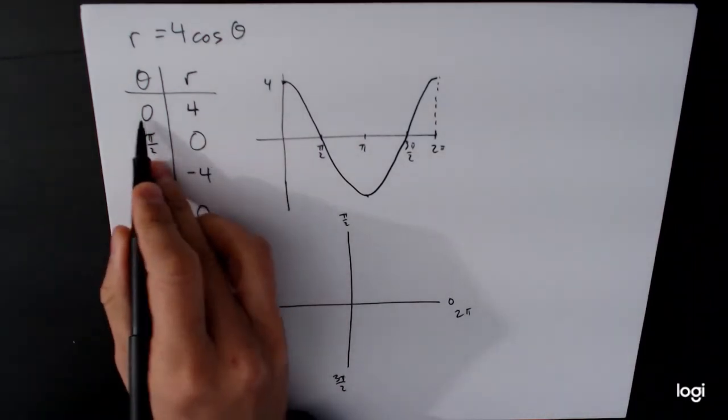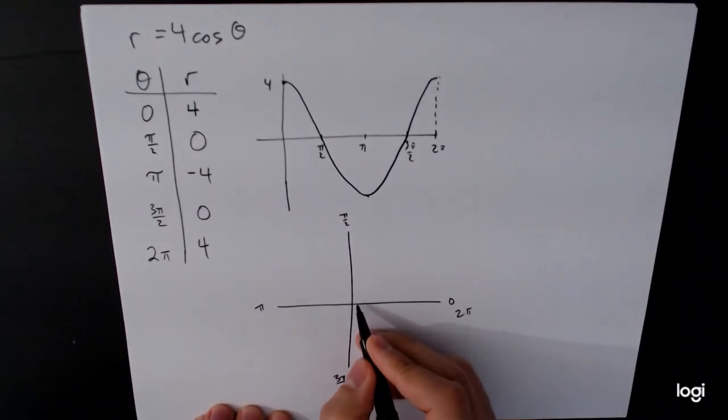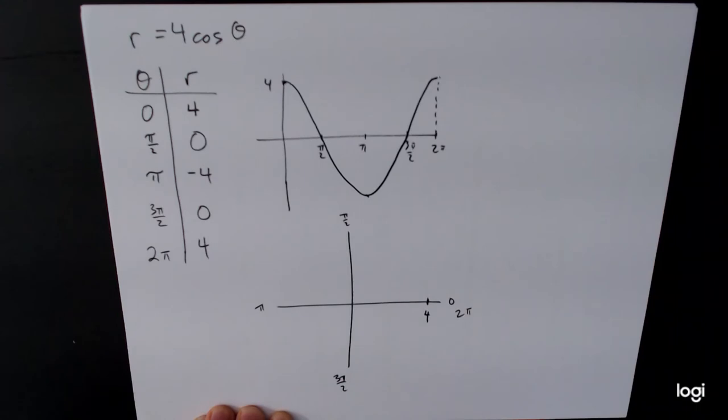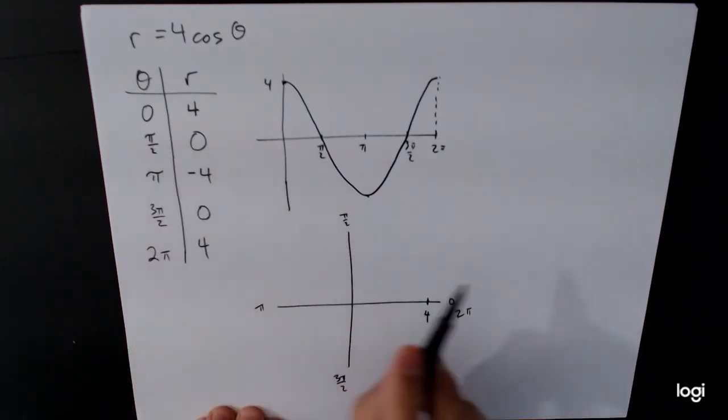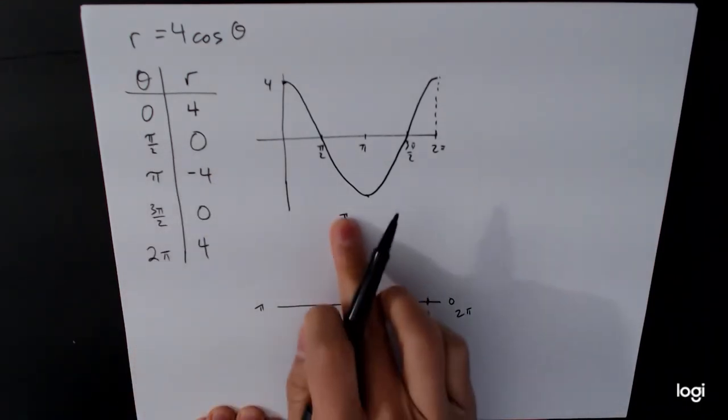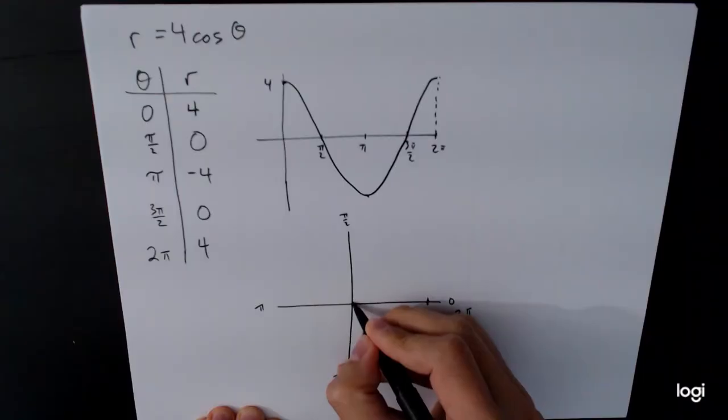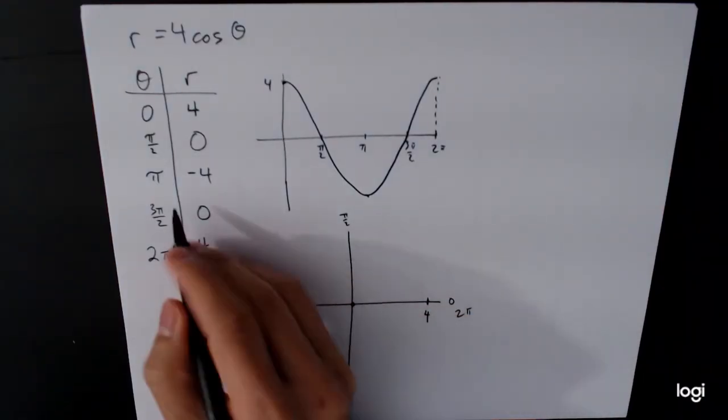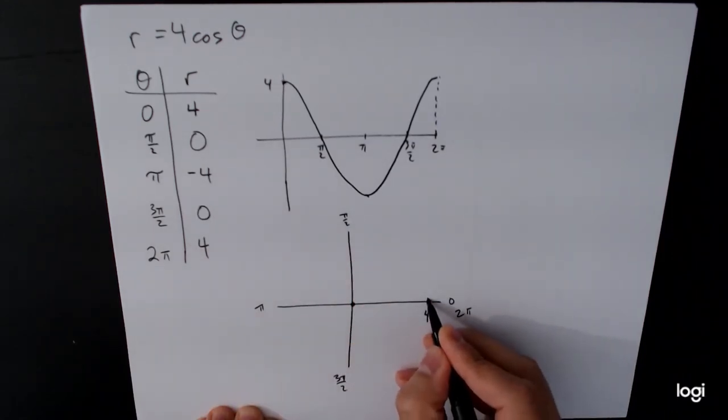So let's see what happens. When θ is equal to 0, r is equal to 4. So we're going to have a radius of 4 on the θ equals 0 line, which is going to be out here. And then at π over 2, going straight up and down, we'll have a radius of 0. And then at π, when we're pointing to the left, the radius will be negative 4. So it's going to be here again.